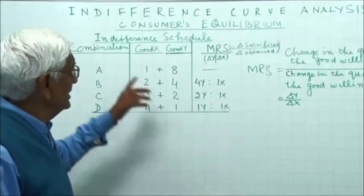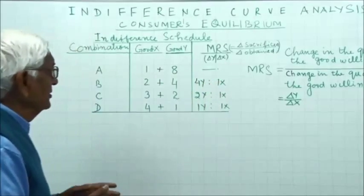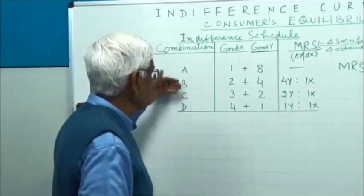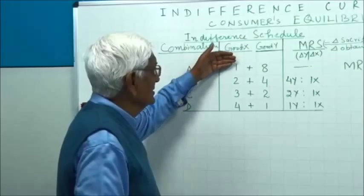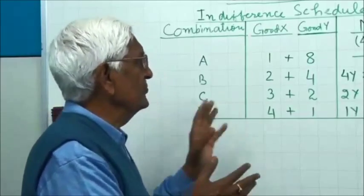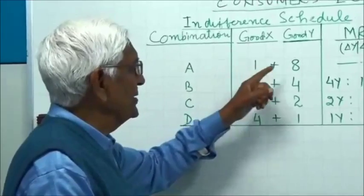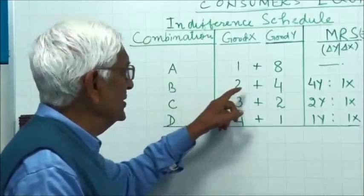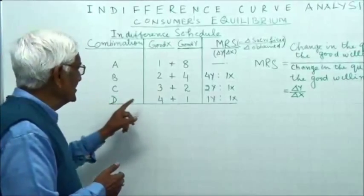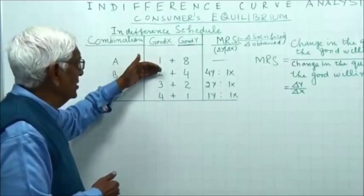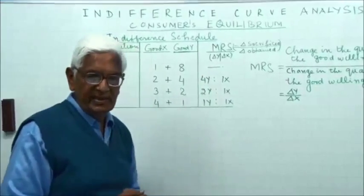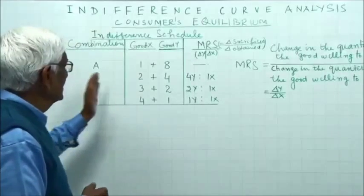This is an indifference schedule. It has four columns: one showing different combinations, then good X and good Y — which together make up a combination. For example, the first combination is 1X plus 8Y, the second is 2X plus 4Y, the third is 3X plus 2Y, and the fourth is 4X plus 1Y. We will take up the meaning of the fourth column a little later.